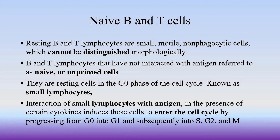We have to talk about naive B cells and naive T cells. Naive means the cell is immature and unprimed. We call these cells naive B cells or naive T cells.